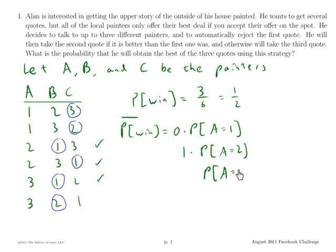And finally, what happens if A gave me the third best bid, which in this case is the worst bid? Well, there are two bids that are better than that. There's a 50% chance that the next time I see a bid that's better than A, that it's the best bid, and a 50% chance that it's the second best bid. So there's a one-half chance that I win in that case.